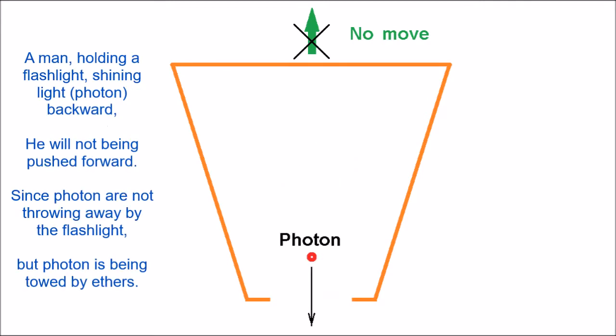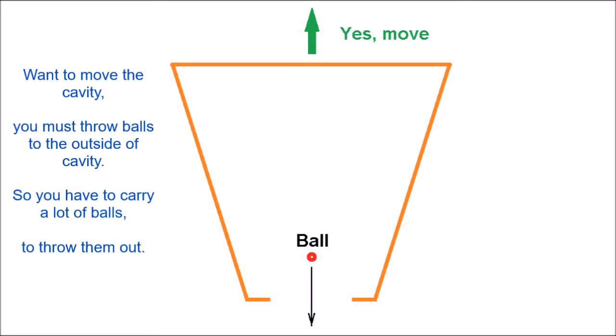A man holding a flashlight, shining light — photons going backward — he will not be pushed forward. Since photons are not thrown away by the flashlight, but photons are being towed by ethers.